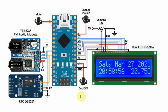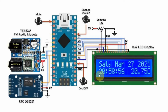A block diagram of the modified system is shown here. We have a real-time clock DS3231 module interfaced with the Arduino using an I2C connection, which displays in real-time the date, the time, and the temperature on the LCD screen.